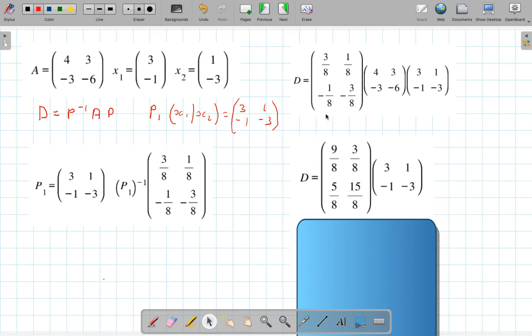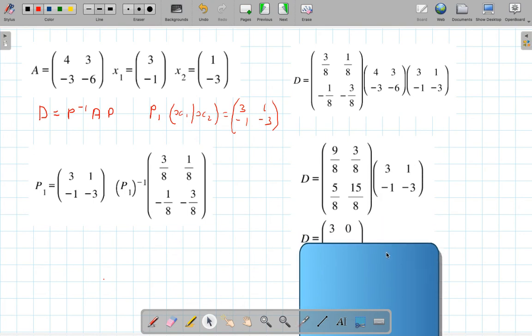So that's P to the minus 1 times A. And now I'm going to take that new matrix and times it by the P up here. So I've got this one times this one. And that take away 3 over 8, giving me 24 over 8, which is 3.